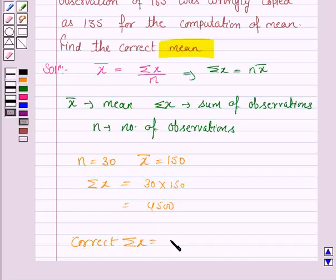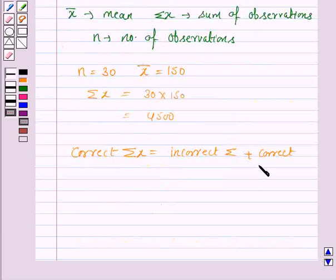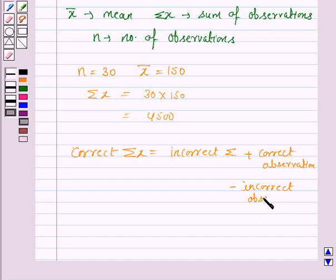So the correct sum equals the incorrect sum plus the correct observation minus the incorrect observation.